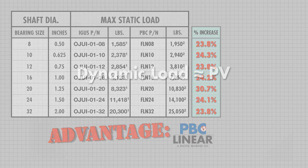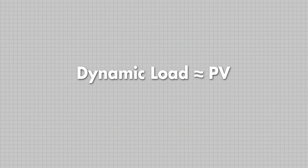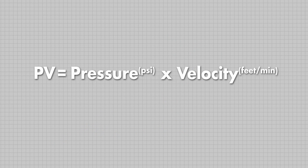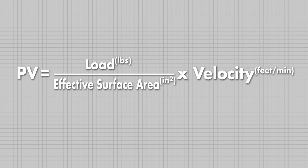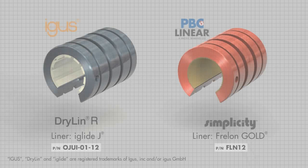Now let's move on to the comparison of dynamic loads. For a plain bearing, dynamic load is calculated based upon PV value. PV stands for pressure times velocity; the standard imperial units for PV are psi times feet per minute. Pressure is load divided by effective surface area. For a given application, the load and velocity remain constant and do not vary based on the type of bearing used; however, the effective surface area does change based on the type of bearing used.